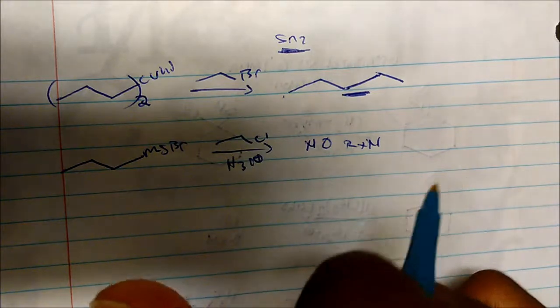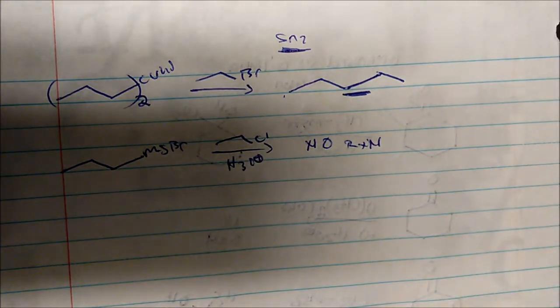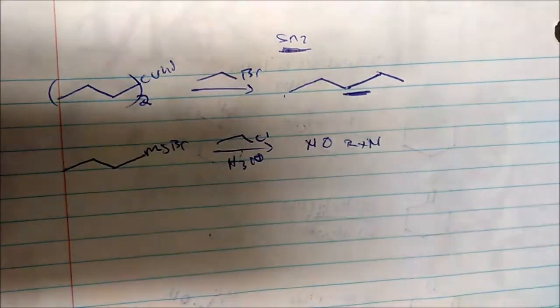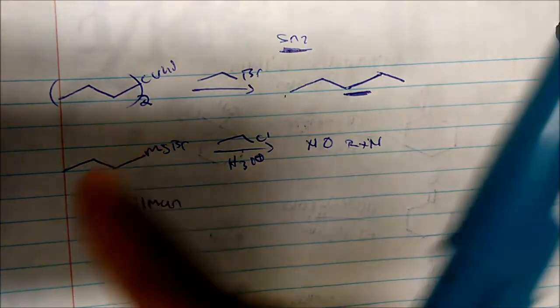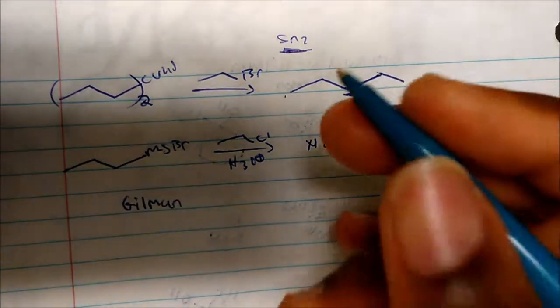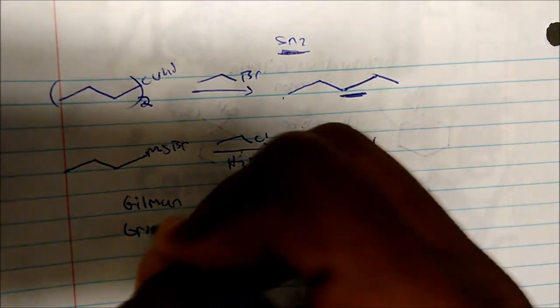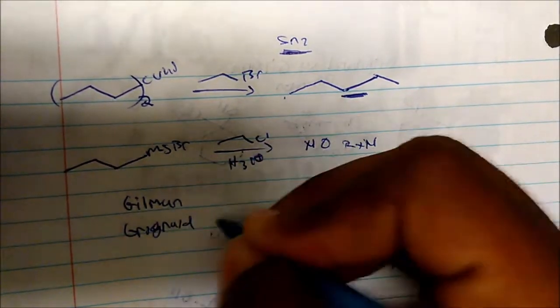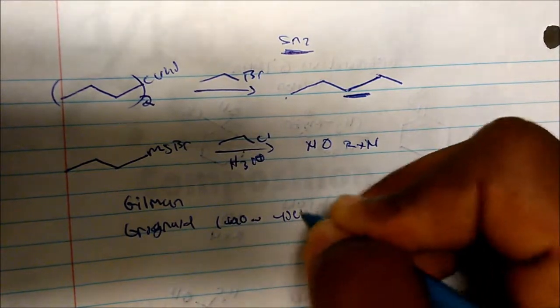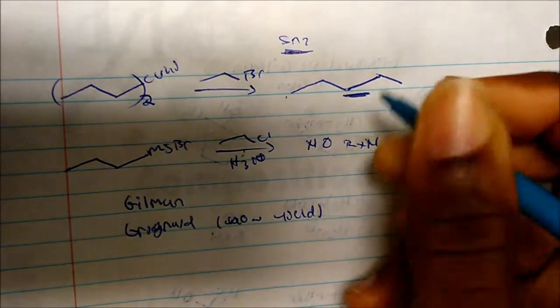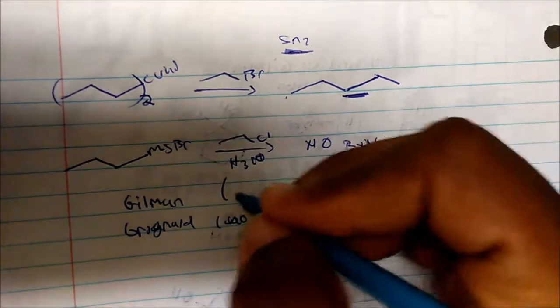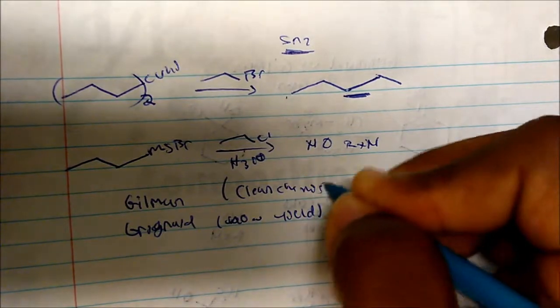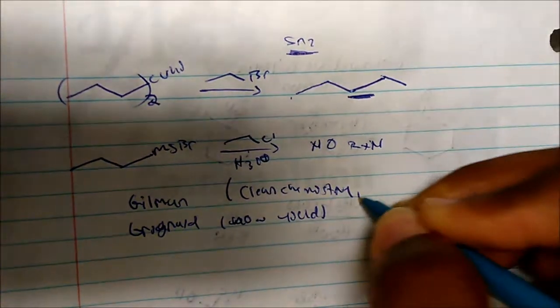Gilman chemistry works very well for SN2 targets. With Grignard chemistry, we have to do this under conditions that are very low water. We don't want any water around Grignard chemistry. What tends to happen is that for Grignard, we get low yields. We lose a lot of our products because we have to do everything so fast. Gilman chemistry is clean chemistry, so you get high percent yields in the lab.